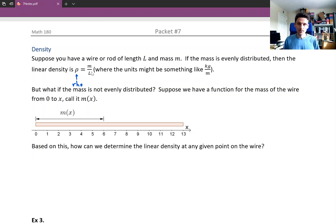But what if the mass is not evenly distributed? So what if it's heavier on one end and lighter on the other end? So suppose we have a function that represents the mass of the rod at any given point along the rod. We're going to call that m(x). That's going to give us the mass from one side of the rod all the way out to another part of the rod. So in the picture here, m(x), this would be like m(6) in the picture actually. That would be the mass of the rod from this x value of 0 to the x value of 6 if you're laying your rod along a number line. So based on this information, how can we determine the linear density at any given point on the wire?